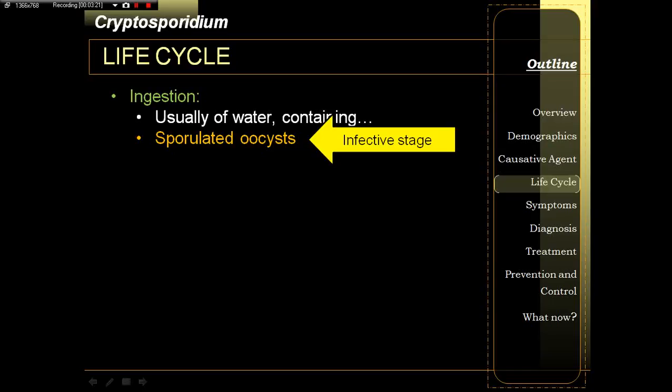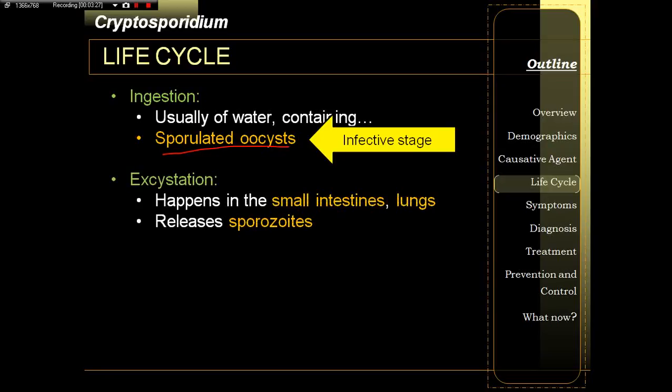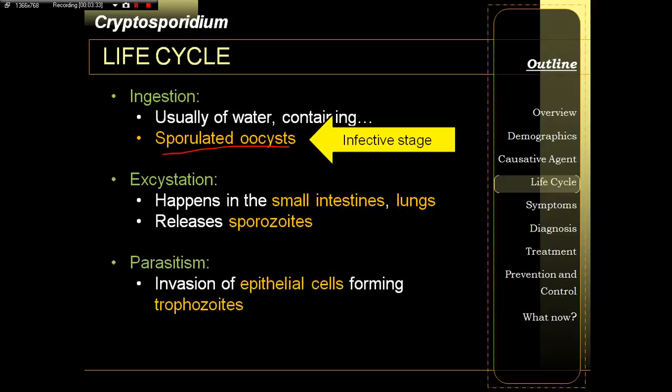The infective stage is the sporulated cyst. It breaks up inside the small intestines, and also in the lungs, releasing sporozoites which then invade the epithelial cells. The habitat inside the host is the epithelial cells inside the small intestine.